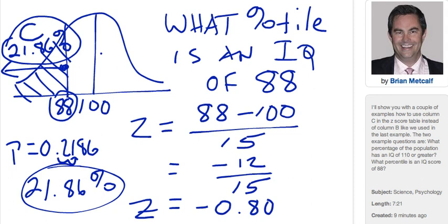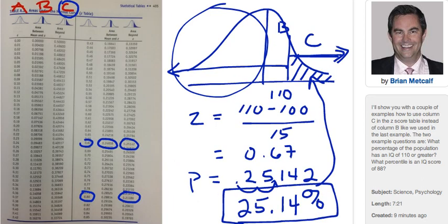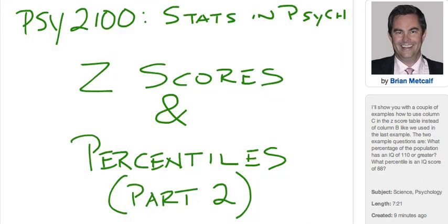You need to try these out with a few other examples of your own. Try some of the examples that are in the text. And there shouldn't be any problem taking Z-scores to percentiles. See you next time.